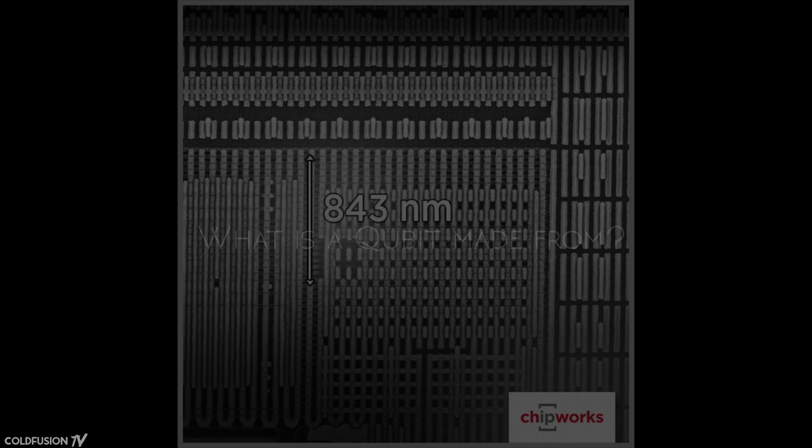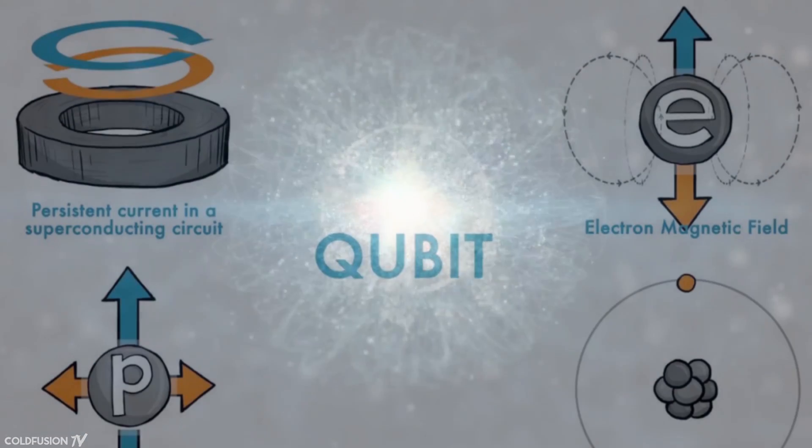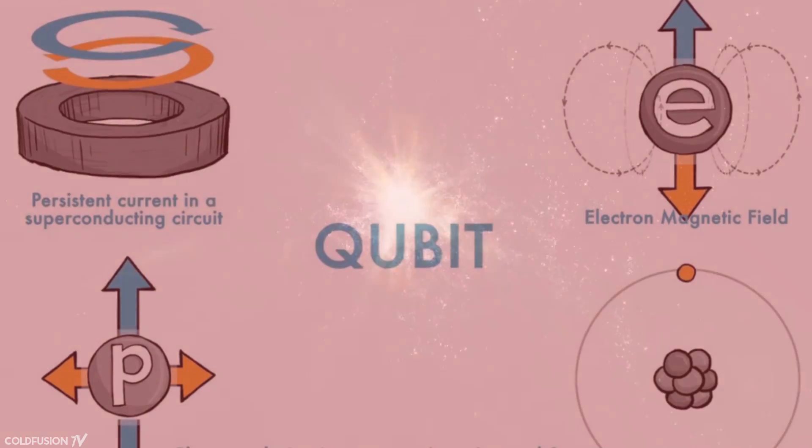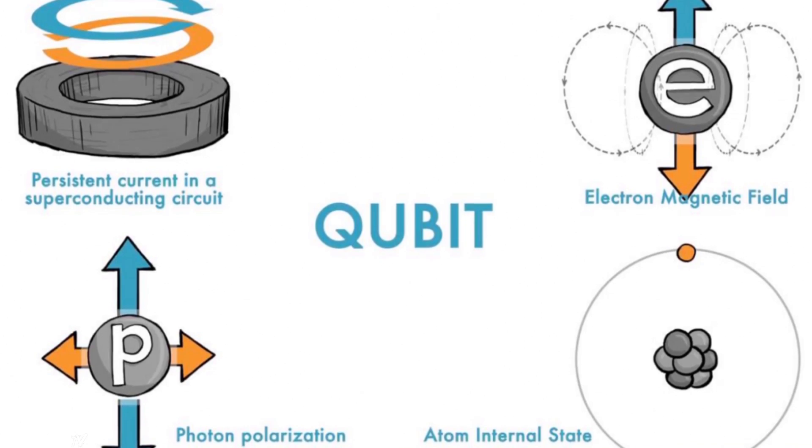So what is a qubit made from? While a normal computer's bits are made from tiny transistors, a qubit can be anything that exhibits quantum behavior. An electron, an atom, or even a molecule. That is, if the environment is right. More on this later.